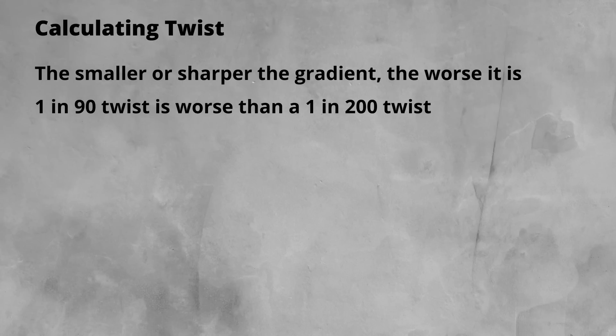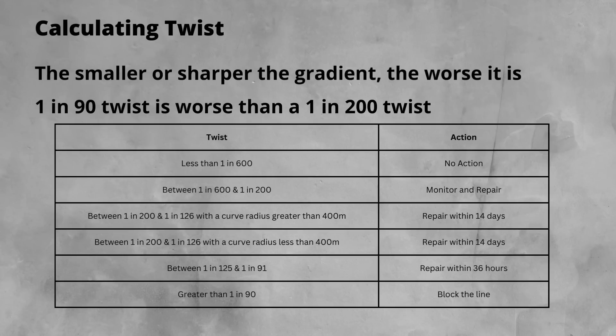In the UK there are set limits that dictate how a twist needs to be responded to. The table shows the required responses. You also notice that curvature does become a factor, with curves of less than 400m radius posing more of a risk, therefore needing to be repaired quicker.